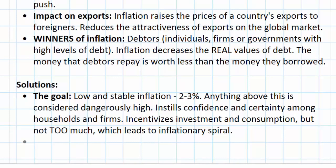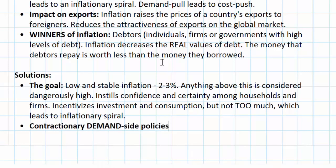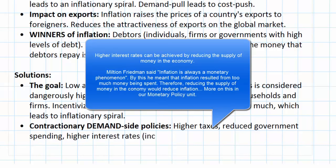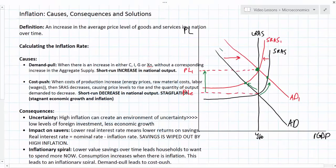So what policies could be used to bring down an inflation rate higher than two or three percent? One approach is contractionary demand side policies — policies that reduce the level of aggregate demand, such as higher taxes, reduced government spending, or higher interest rates, which incentivize savings and disincentivize consumption and investment. Contractionary demand side policies have the effect of reducing aggregate demand to bring down the inflation rate resulting from demand pull inflation, bringing output closer to the full employment level and slowing down an overheating economy.